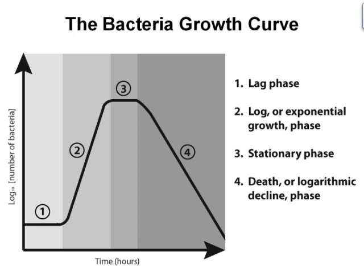Bacterial growth occurs when bacterial cells divide into two daughter cells by a process called binary fission. The resulting daughter cells are identical, providing that no mutational event occurred. Hence, local doubling occurs. This figure illustrates a typical bacterial growth curve with time in hours on the x-axis and log base 10 of the number of bacteria on the y-axis. Numbers 1, 2, 3, and 4 represent lag, exponential, stationary, and death phases, respectively.